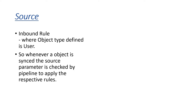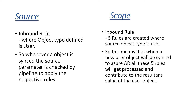The next part is scope. If you have five rules where you have defined object type as user, this means that for the user object the scope is of five rules — or vice versa, for these five rules the scope is user. Source and scope are interrelated: source is the object type, and depending on that object type, scope determines how many rules should be applied to that particular object before it gets synced to the cloud.